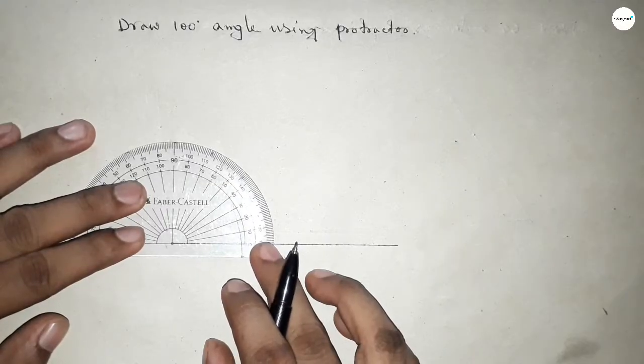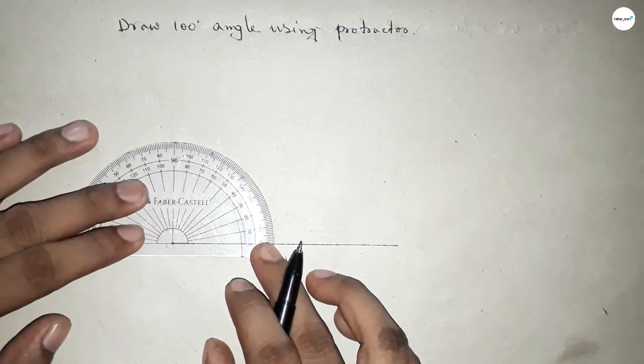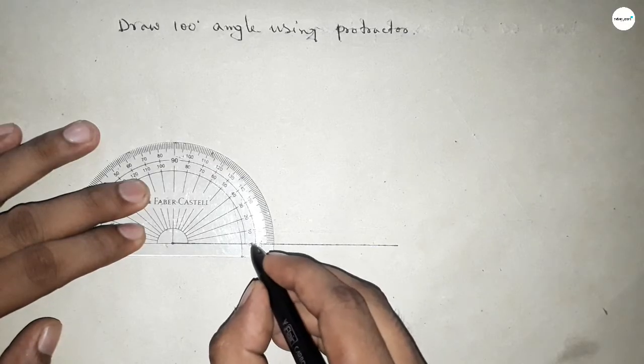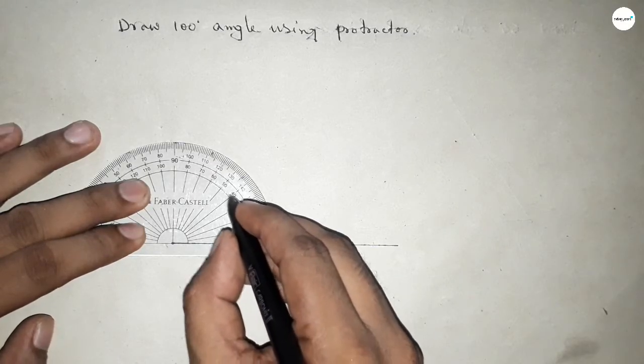Now using the protractor, putting the protractor on the point here perfectly, and now counting the angle.